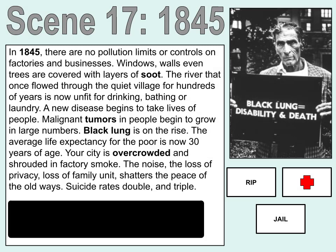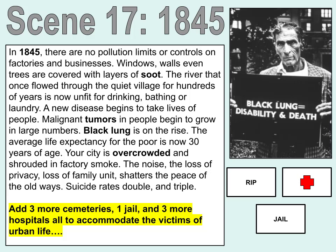Scene 17. In 1845, there are no pollution limits or controls on factories and businesses. Windows, walls, even trees are covered with layers of soot. The river that once flowed through the quiet village for hundreds of years is now unfit for drinking, bathing, or laundry. A new disease begins to take the lives of people. Malignant tumors in people begin to grow in large numbers, and melanoma is on the rise. The average life expectancy for the poor is now 30 years of age. Your city is overcrowded and shrouded in factory smoke. The noise, the loss of privacy, loss of family unit shatters the peace of the old ways. Suicide rates double and triple. Add three more cemeteries, one jail, and three more hospitals to accommodate the victims of urban life.